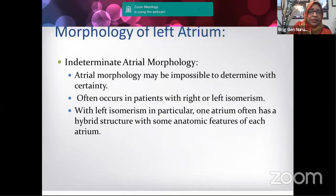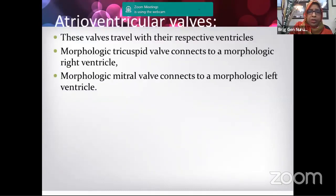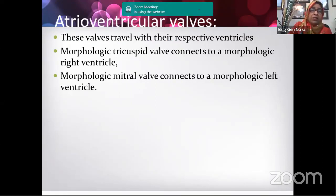Indeterminate atrial morphology may occur, and this represents situs ambiguous. After the atria, we come to the atrioventricular valves. These valves always travel with their respective ventricles — an important formula: the tricuspid valve always travels with the right ventricle and the mitral valve always travels with the left ventricle, with no exceptions to this principle.